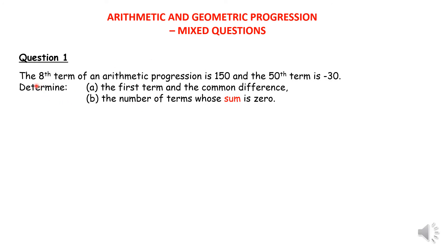The first question says the 8th term of an AP is 150 and the 50th term is negative 30. This is an arithmetic progression. We're supposed to find the first term and common difference, and in part b, determine the number of terms whose sum is 0.